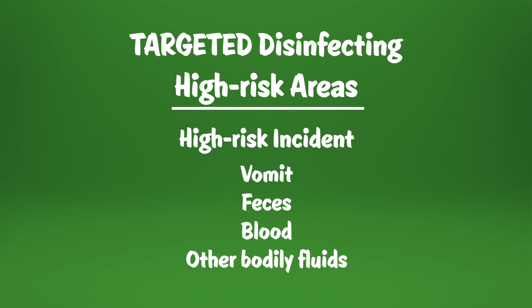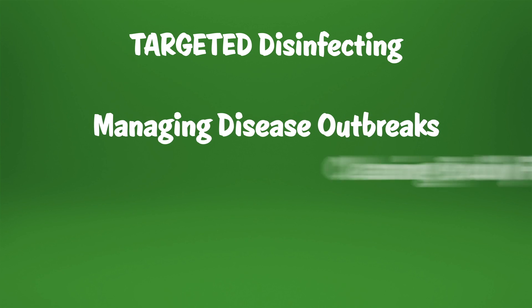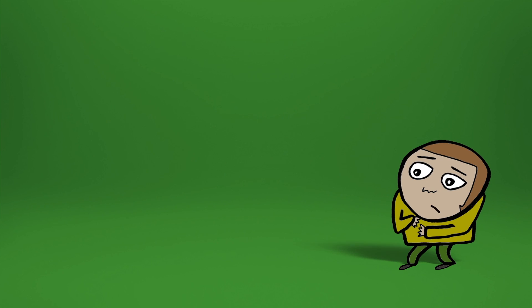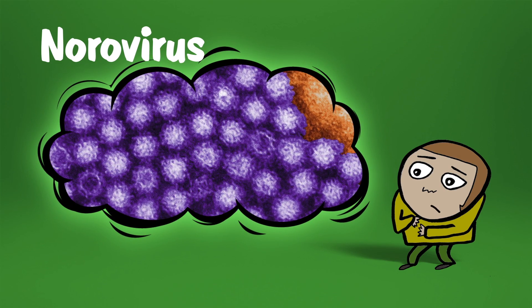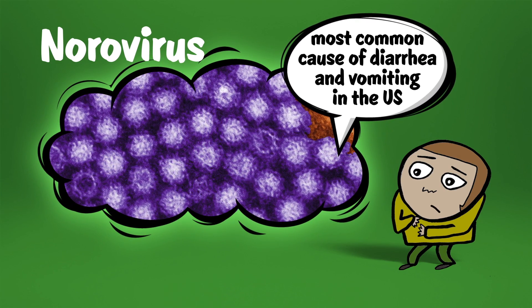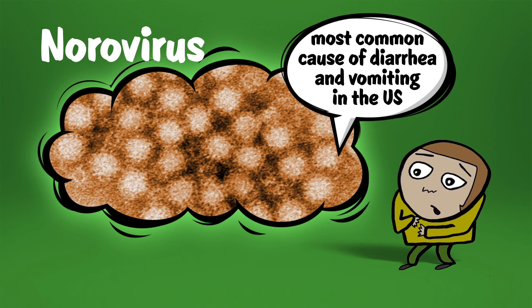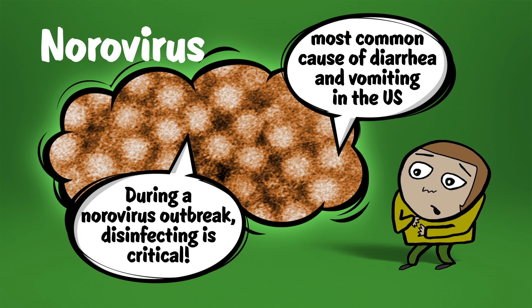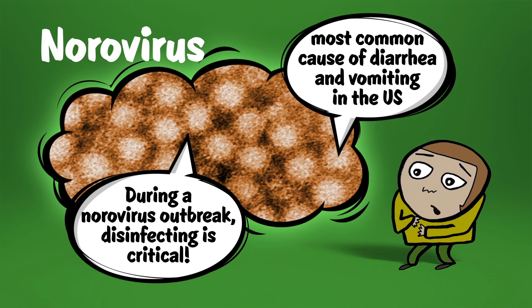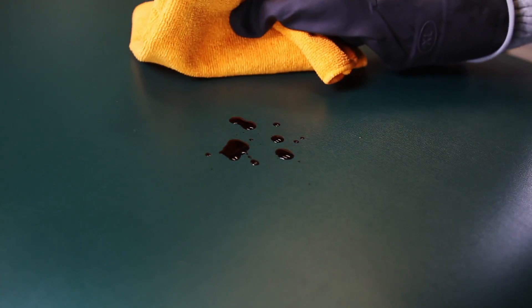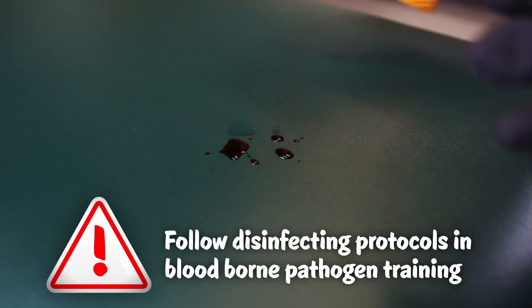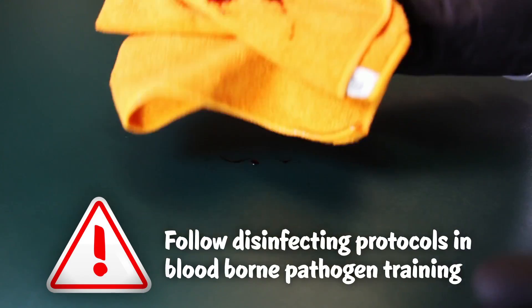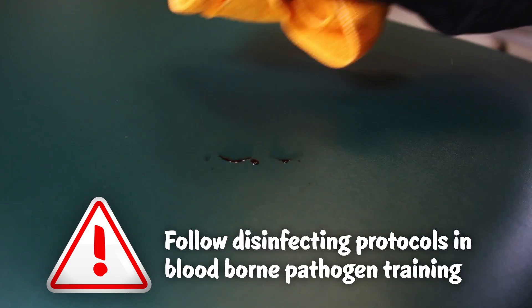Certain situations require extra care, such as managing disease outbreaks and cleaning bodily fluids. Vomit and diarrhea can transmit norovirus, a highly contagious virus that is the most common cause of diarrhea and vomiting in the U.S. During a norovirus outbreak, disinfecting is critical. When incidents involve blood or other bodily fluids, staff should follow the disinfecting protocols outlined in a school or district's blood-borne pathogen training.